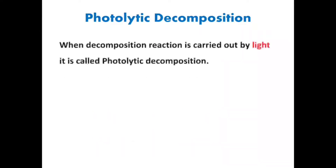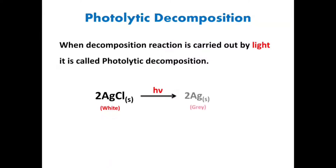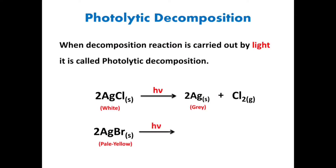Photolytic decomposition: when a decomposition reaction is carried out by light, it is called photolytic decomposition. Silver chloride, a white-colored salt, in the presence of light decomposes into silver and chlorine. Silver bromide, a pale yellow salt, in the presence of light decomposes into silver and bromine.